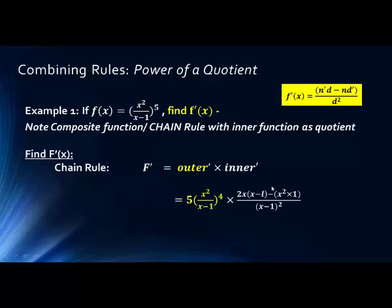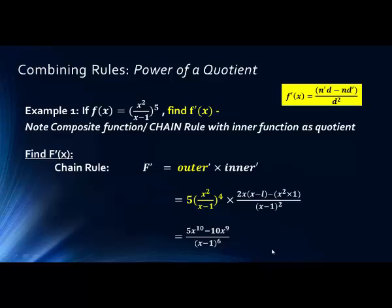For the inner Quotient Rule: derivative of the numerator (2x) times the denominator (x minus 1), minus the numerator (x squared) times the derivative of the denominator (which is 1), all over the denominator squared. We then clean this up by multiplying 2x times (x minus 1) and simplifying.